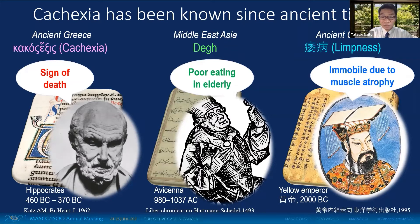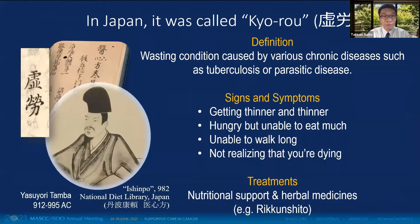In the Middle East, Avicenna called it 'dec' and reported it mainly affects elderly people. In China, the Yellow Emperor called it limpness, which immobilized people with chronic diseases due to muscular atrophy. In Japan, it was called kyoro, defined as a wasting condition caused by various chronic diseases such as tuberculosis or parasitic infection.